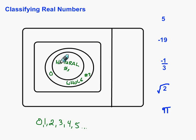Next group, as we move our way out, are called the integers. Integers include all of the natural numbers, all of the whole numbers, and now we get into the negative numbers. So negative 1, negative 2, negative 3, and so on.